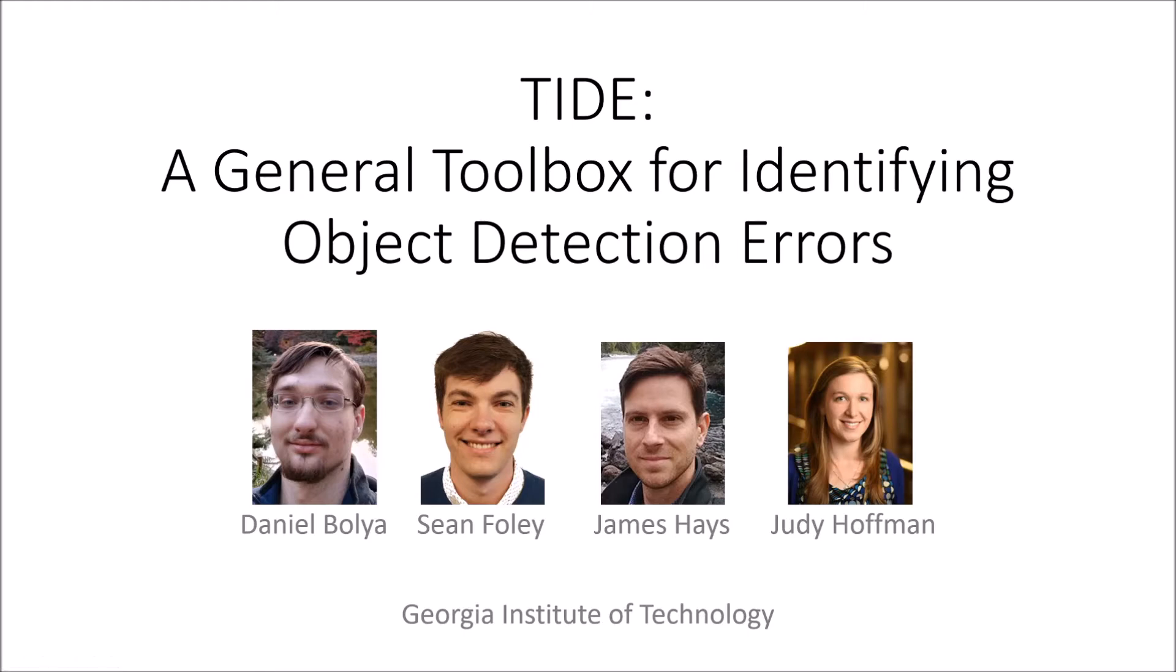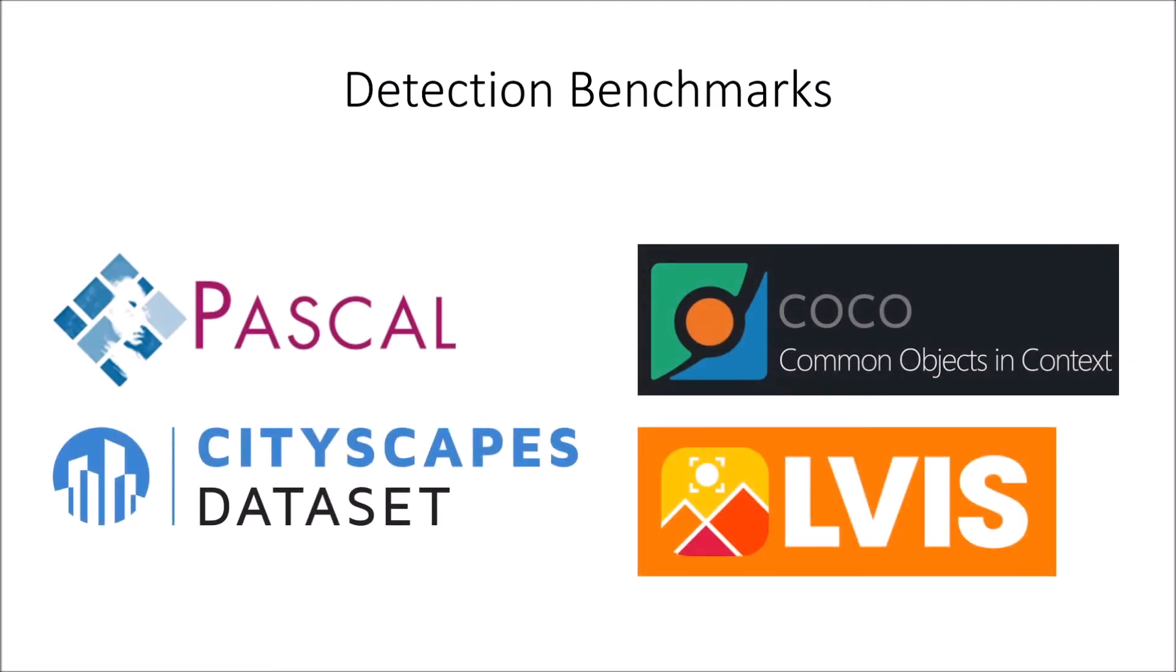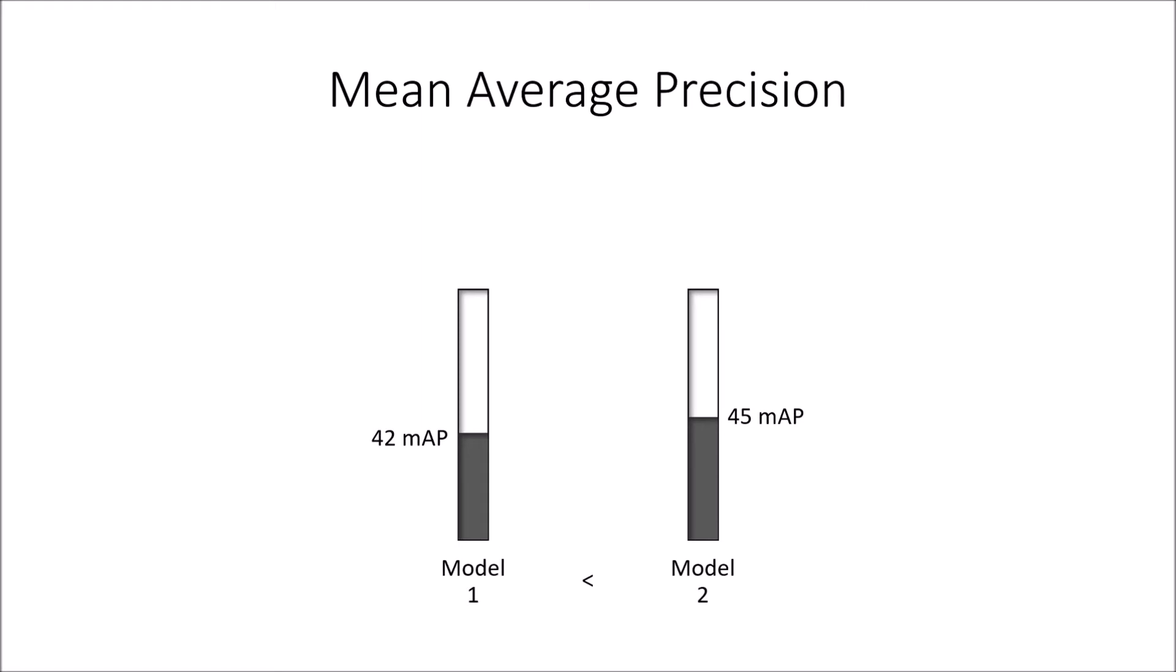These fields have made rapid progress in the past several years, thanks in part to competition on challenging detection and segmentation benchmarks. Typically, performance on these benchmarks is summarized by one number, mean average precision, which is a complicated term that involves integrating over a precision recall curve and averaging over several criteria. While MAP is good for determining the best model in a competition, it's a very complicated and high-level summary of a model's performance.